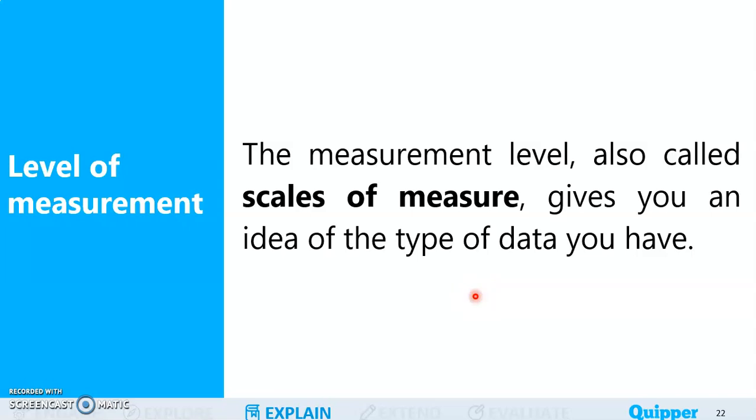Hi, in this video we are going to continue our discussion on the types of variables in quantitative research. Variables in quantitative research are categorized based on either the level of measurement and or its role in quantitative research. This time we are going to talk about the types of variables based on the level of measurement. The measurement level, also called the scales of measure, gives you an idea of the type of data that you have in your research. This will also help you in choosing the right statistical tool to use for the analysis of your data.